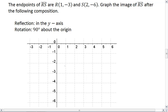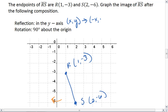Okay, R is at 1, negative 3, and S is at 2, negative 6. All right, first thing we want to do is reflect in the y-axis. A reflection in the y-axis takes your points. It leaves the y-coordinates the same, but it changes the x-coordinates. So R is going to become R prime at negative 1, negative 3, and S becomes S prime at negative 2, negative 6. That gives us the first transformation.